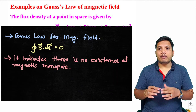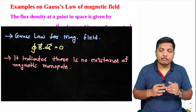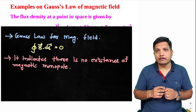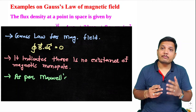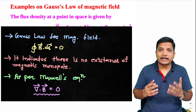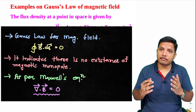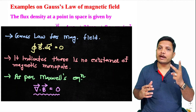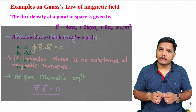By using Maxwell's derivation based on Gauss's law for magnetic field, we can understand that the divergence of the magnetic field will be zero, which also indicates there is no existence of a magnetic monopole. So let us solve two very interesting examples based on Gauss's law for magnetic field.